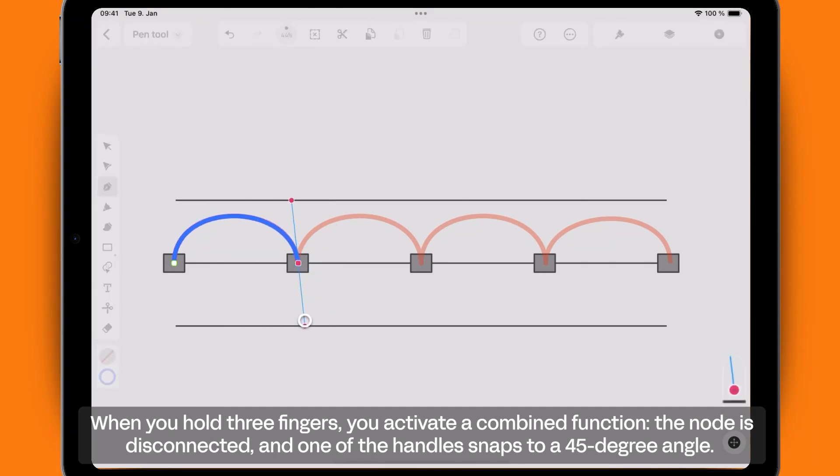When you hold three fingers, you activate a combined function. The node is disconnected and one of the handles snaps to a 45 degree angle.